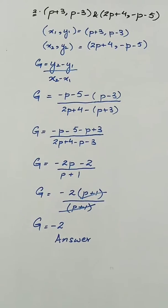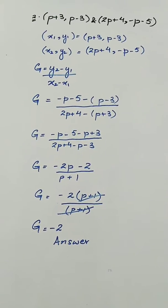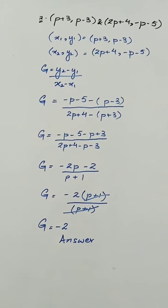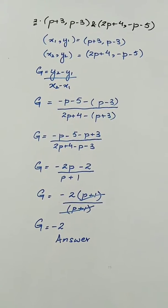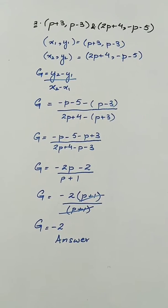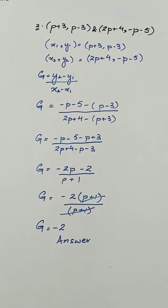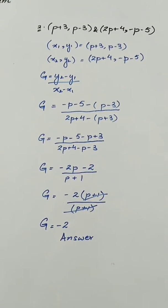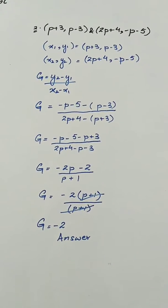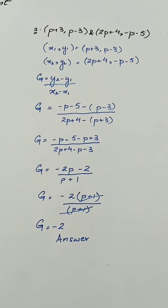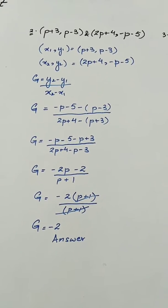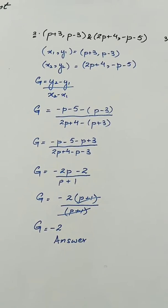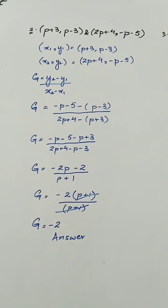Now look at another question in which the coordinates are given as (p+3, p-3) as x1, y1 and (2p+4, -p-5) as x2, y2. So the gradient of these coordinates comes out as (-p - 5) minus y1 which is (p - 3), divided by (2p + 4) which is x2, minus (p + 3) which is x1.